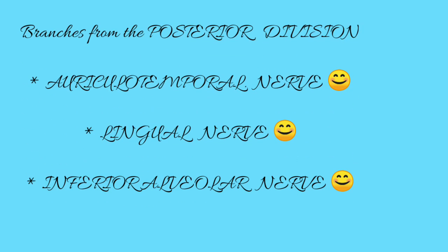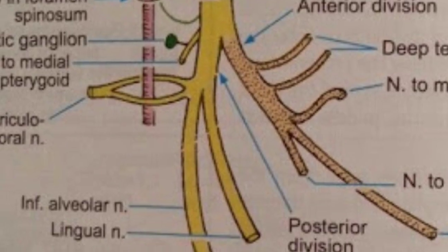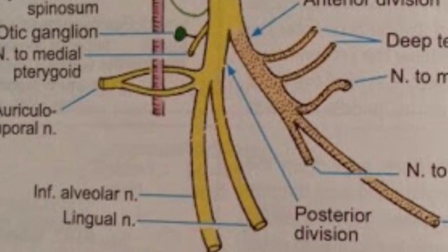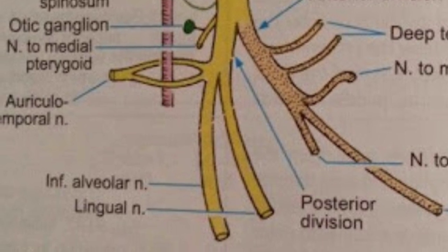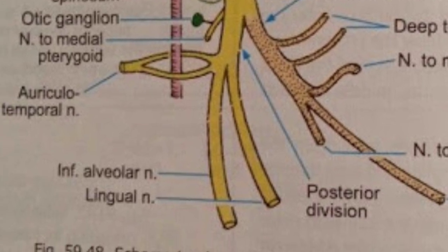Branches from the posterior division include the auriculotemporal, lingual, and inferior alveolar nerves, which are sensory in nature. You can see all three sensory branches of the posterior division.